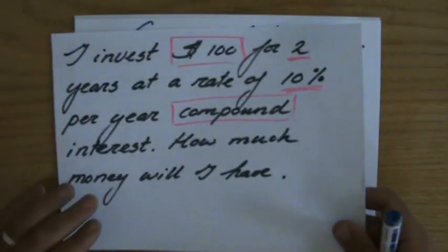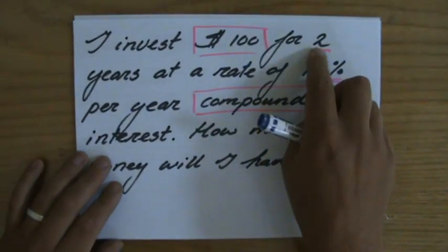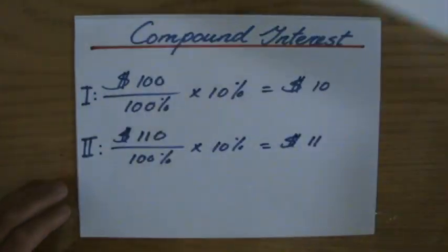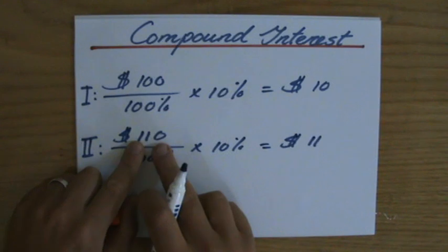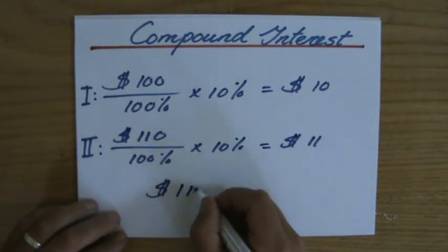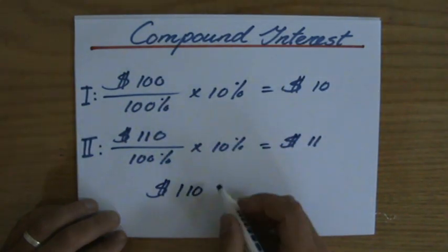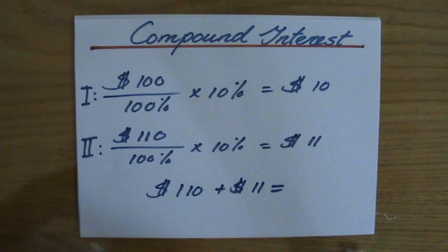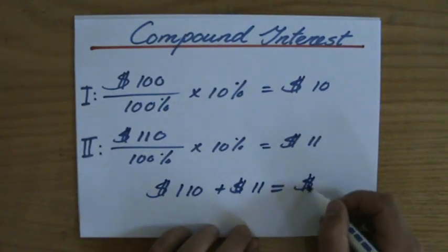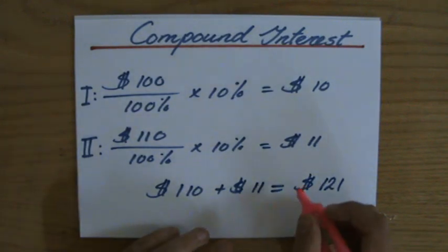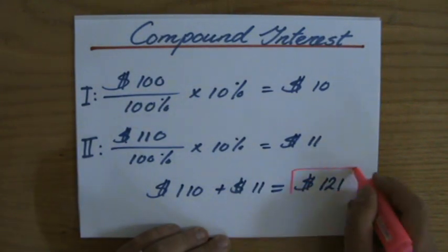So, it was for two years. So, I've calculated it now for two years. And how much money will I have? Well, the beginning of year two, I had $110. But I'm getting, at the end of year two, another $11 of interest. So, how much money will I have in total? That is going to be $121. So, that will be the final answer.